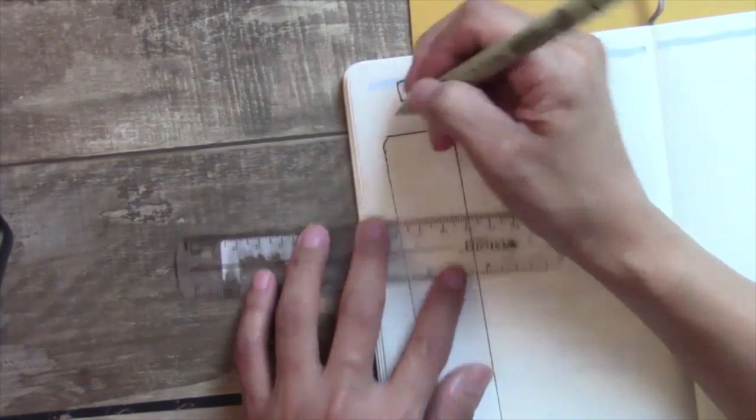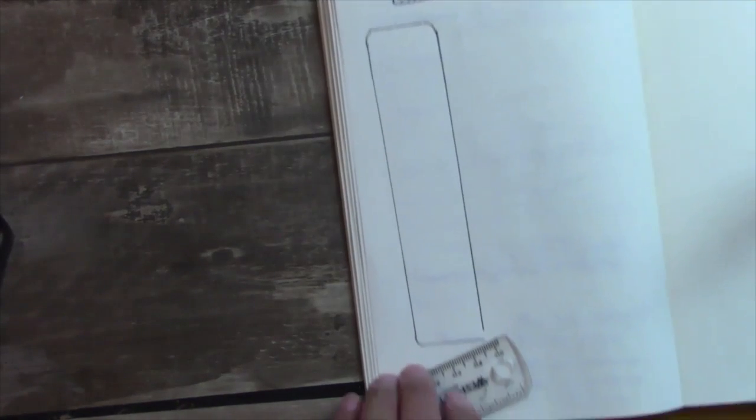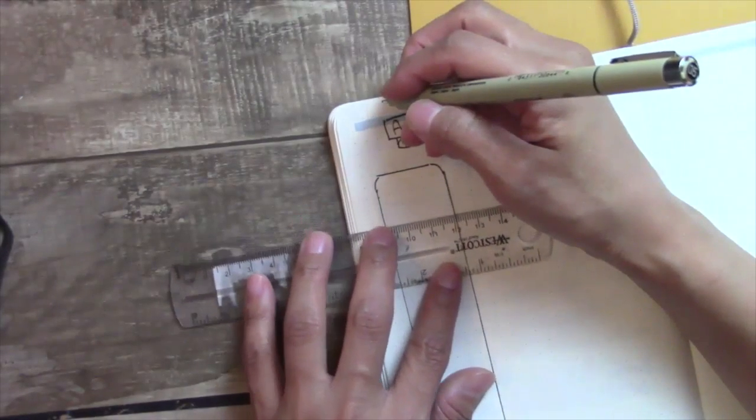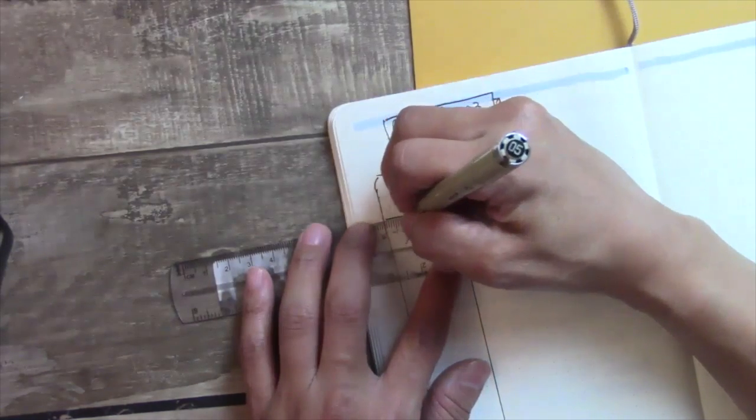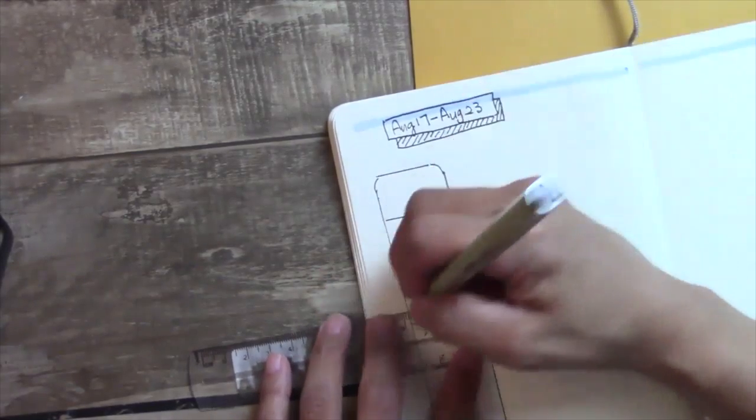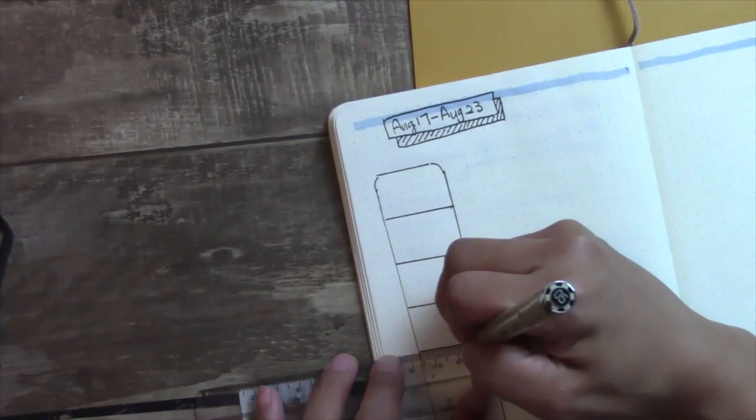I realized that when I was drawing the box, it wasn't in a straight line and I didn't count the dots. So what ended up happening is by the time I finished this, I realized that the whole box was kind of tilted sideways.